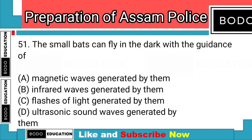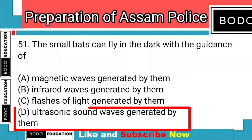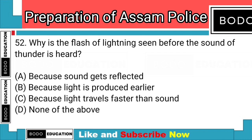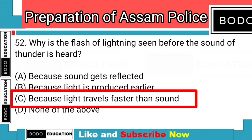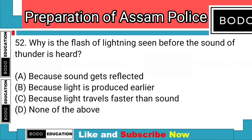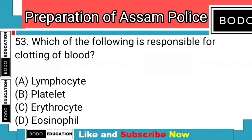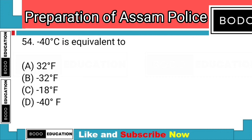Question number 51: Bats can fly in the dark with the guidance of? Answer: Option D — ultrasonic sound waves generated by them. Question number 52: Why is the flash of lightning seen before the sound of thunder is heard? Answer: Option C — Because light travels faster than sound. Question number 53: Which of the following is responsible for clotting of blood? Answer: Option B — Platelets.